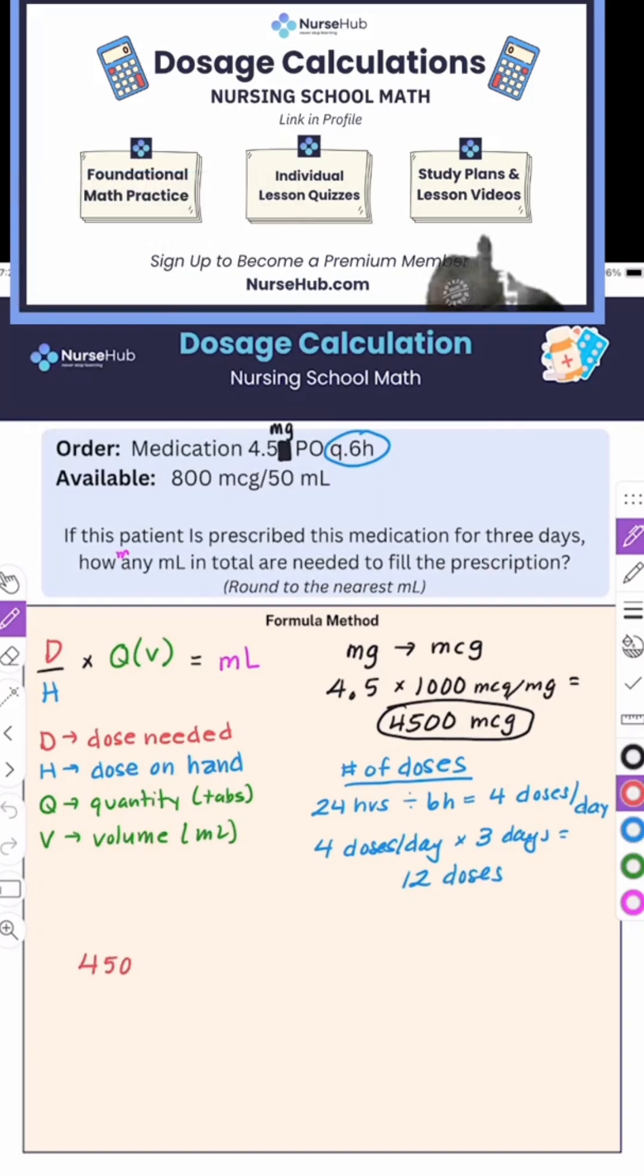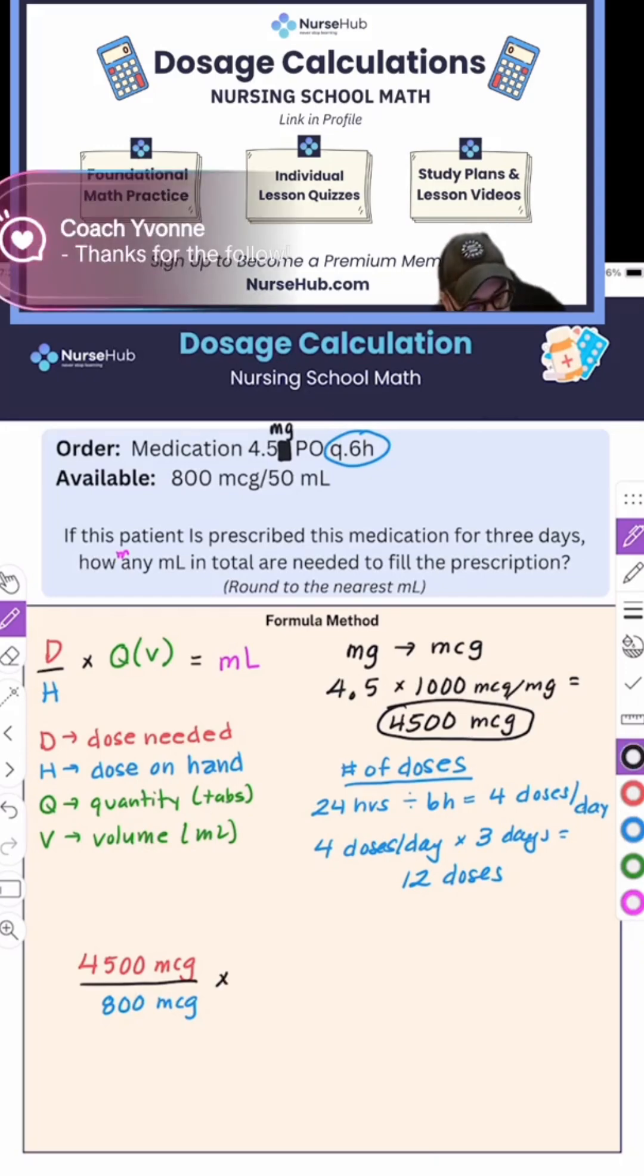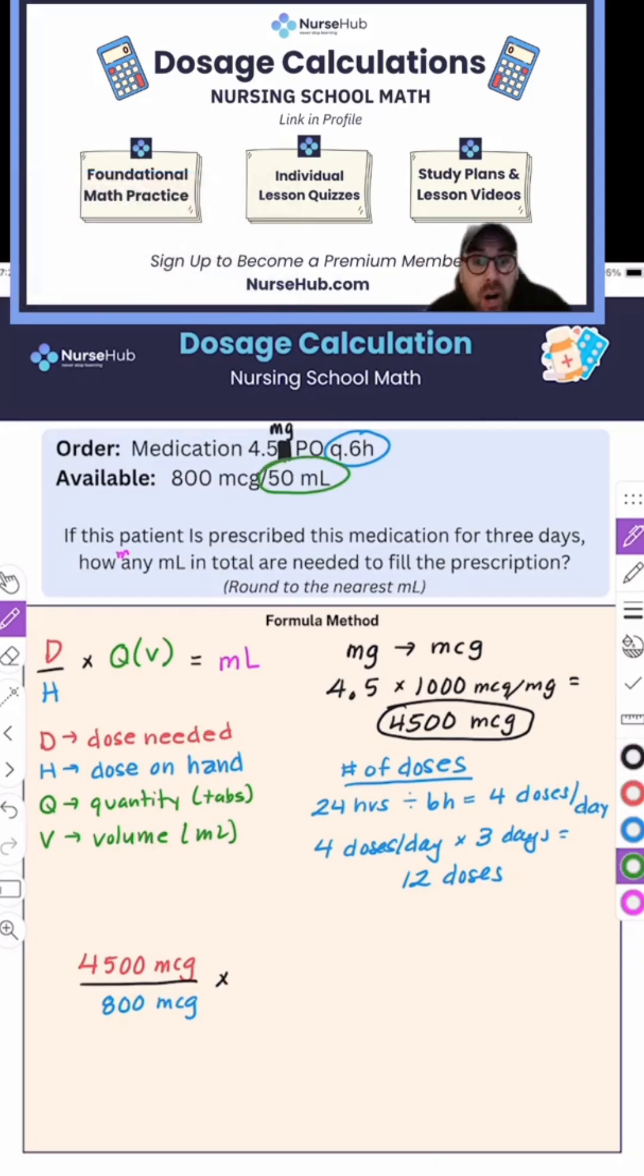I need 4,500 micrograms over what's available or what's on hand. What's on hand is 800 micrograms. Multiply that by our volume. This is why I think about volume because it's our 50 milliliters. That's going to give me 5.625 times 50 is equal to 281.25 milliliters.